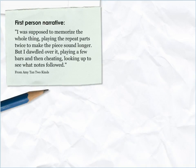First person narrative example: 'I was supposed to memorise the whole thing, playing the repeat parts twice to make the piece sound longer. But I dawdled over it, playing a few bars and then cheating, looking up to see what notes followed.'